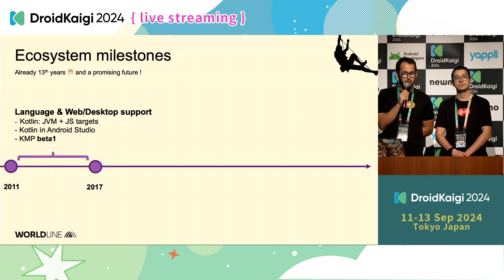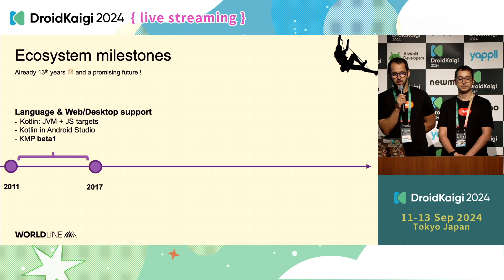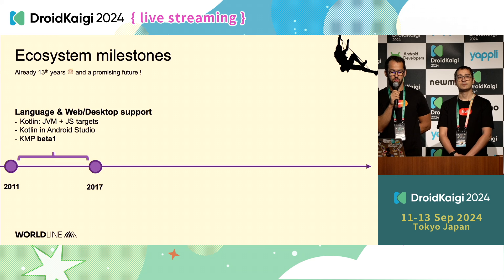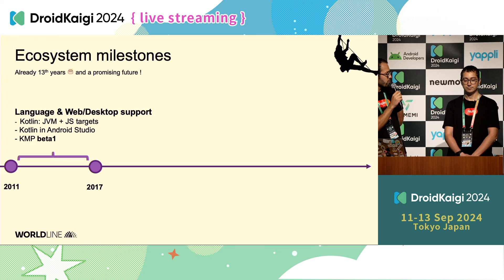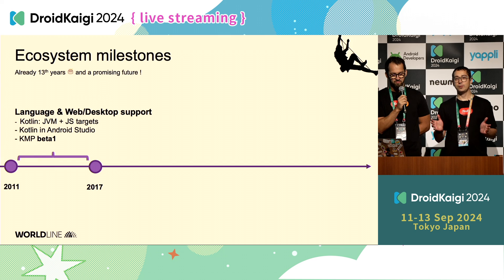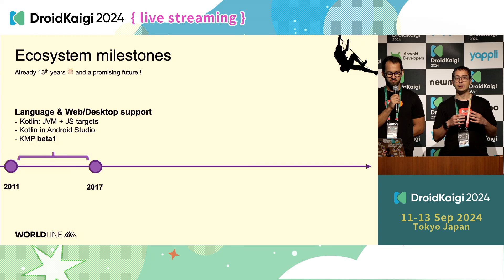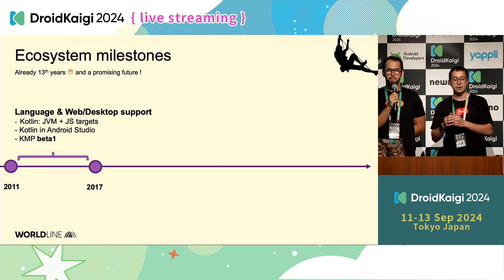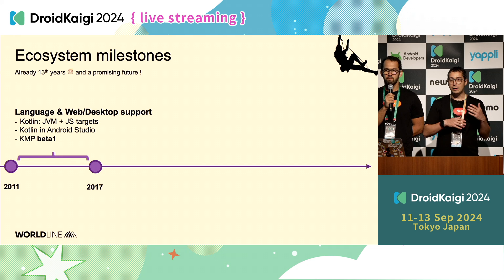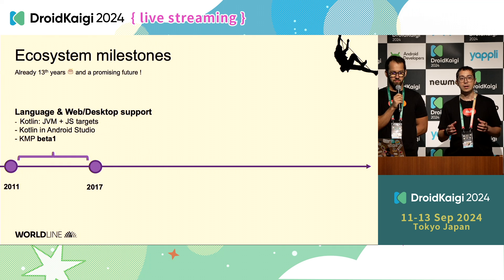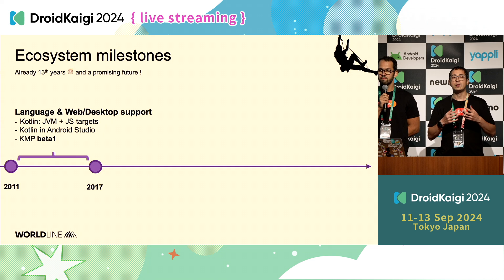Let's have a look at the milestones done by the Kotlin ecosystem over 13 years. Since the creation of Kotlin in 2011, we have seen its multiplatform nature appear, because it has been released as a JVM or Java target and also as a JavaScript target. After that, the Android community adopted Kotlin, and it has been supported in Android Studio. Since then, we started seeing the appearance of Kotlin Multiplatform.